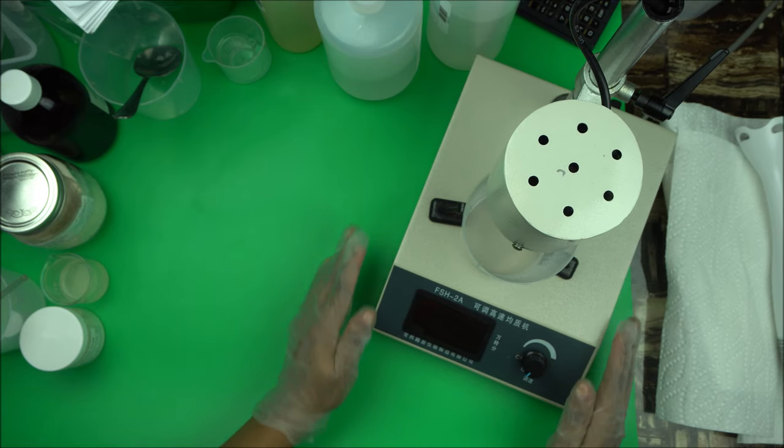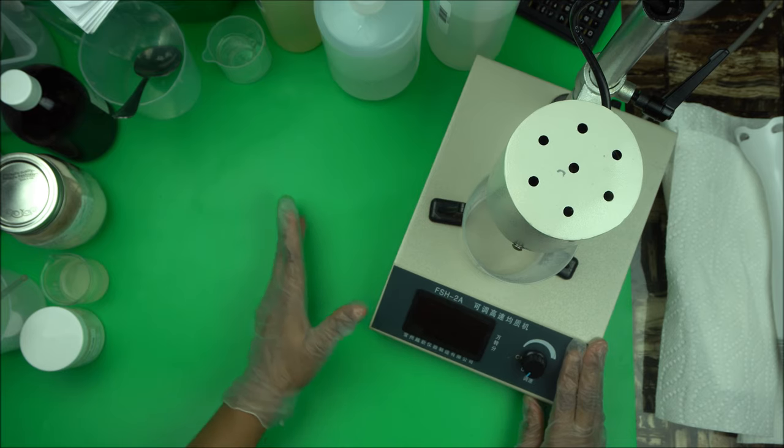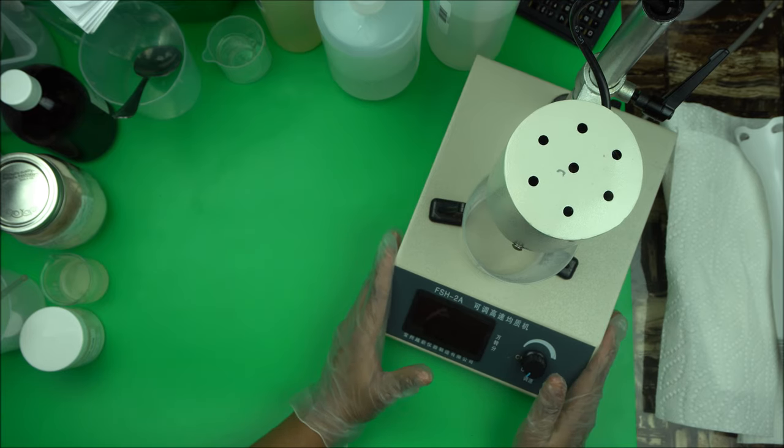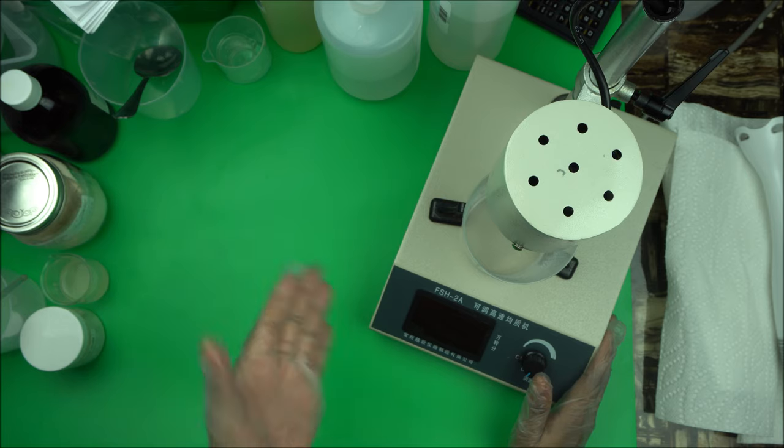So this is a high-speed homogenizer, FSH2A, even though not as popular, but something to start with. This is what I use at home. When I'm in the office, I use the IKA Turex, but that I'm going to show you in another video.